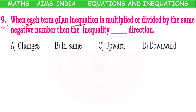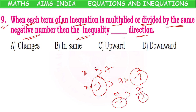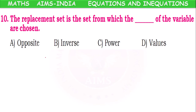Number nine: when each term of an inequation is multiplied or divided by the same negative number, then the inequality dash direction. Suppose x > 7. When multiplying both sides by −3, the inequality sign reverses — if it is greater than, it will become less than because of the negative symbol. So option A: the inequality sign changes.